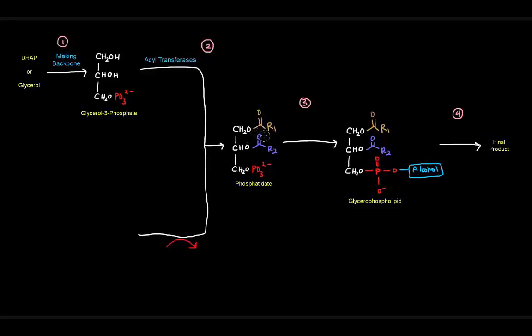Once we have that, we want to add our polar head group, specifically by adding an alcohol of some sort to this phosphate group that's already here in phosphatidate. So we have an alcohol group here, that's going to be the addition of the polar head group. Of course, the phosphodiester bonds are going to be there, and then we basically have a glycerophospholipid.